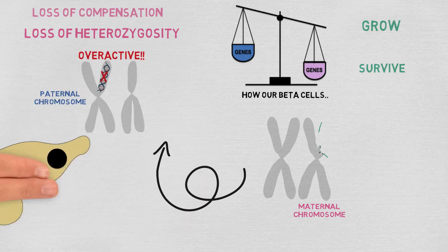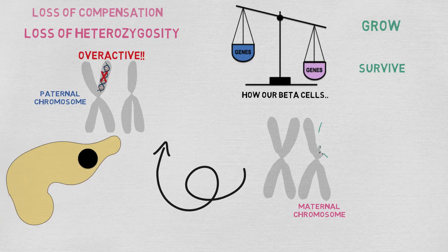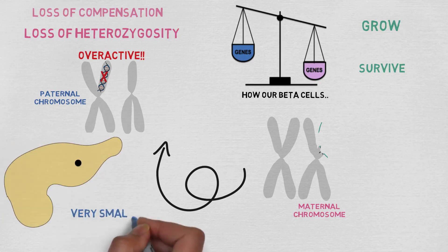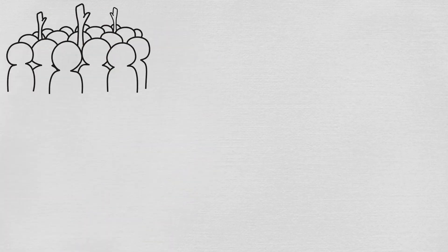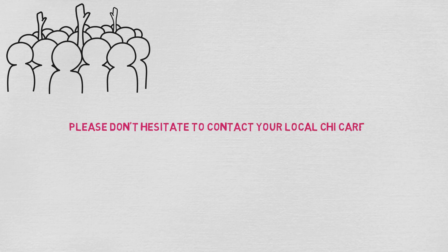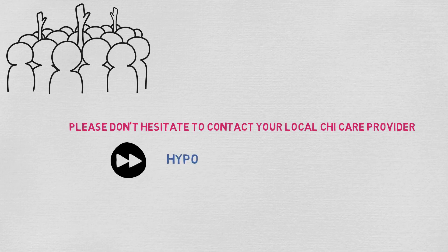This explains why the focal region in the pancreas can grow, although usually it remains very small in size. This is a confusing concept to get to grips with, but hopefully this video has helped. If you do still have any unanswered questions, please don't hesitate to contact your local CHI care provider. Please see the final video in the series to understand the effects of hypoglycemia in CHI.